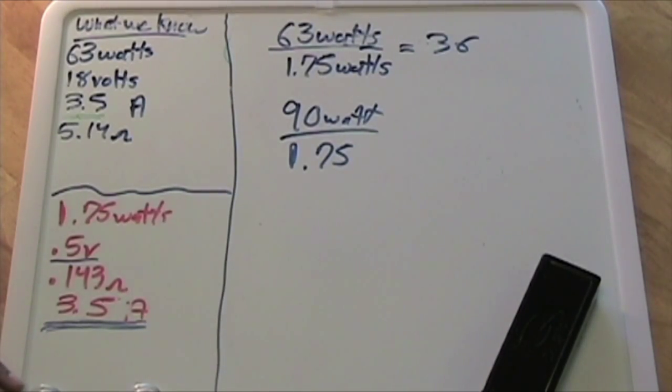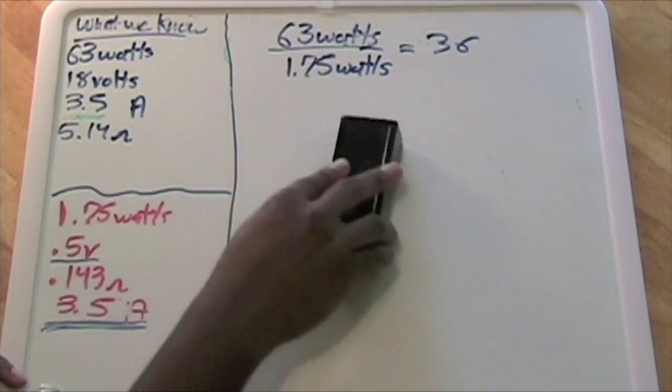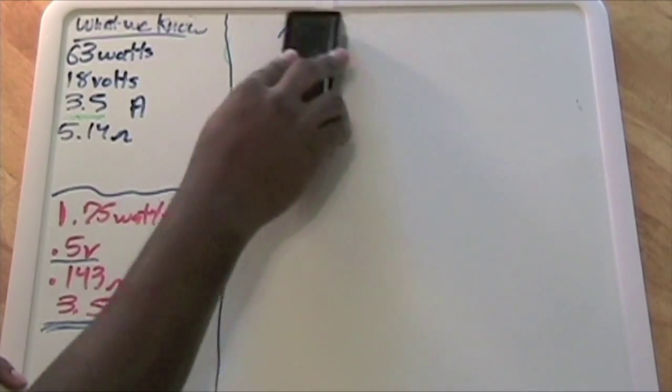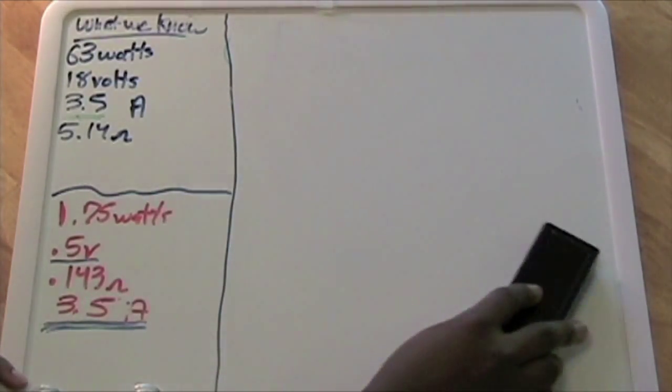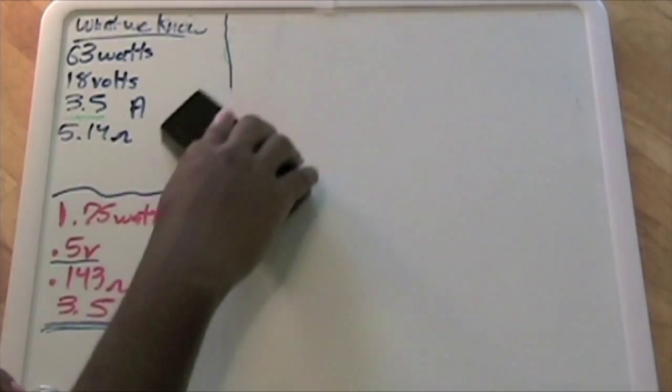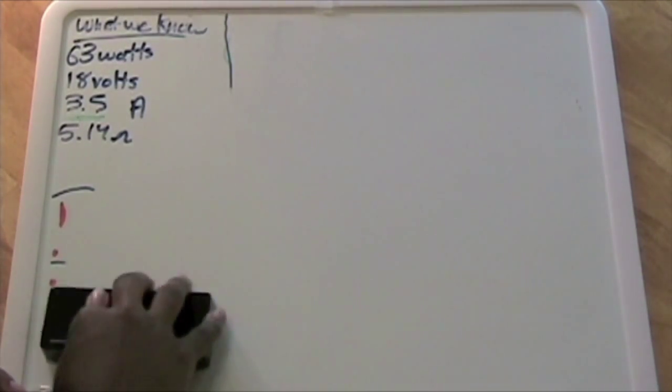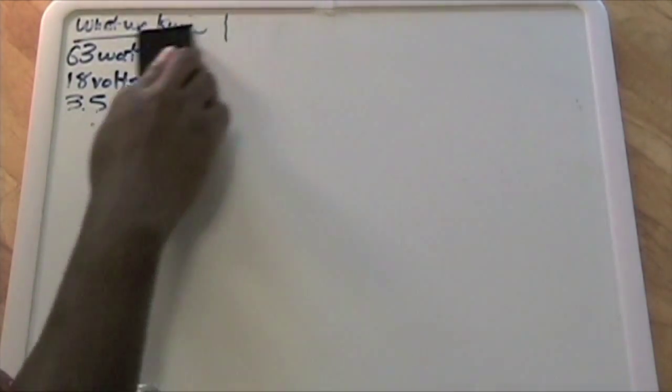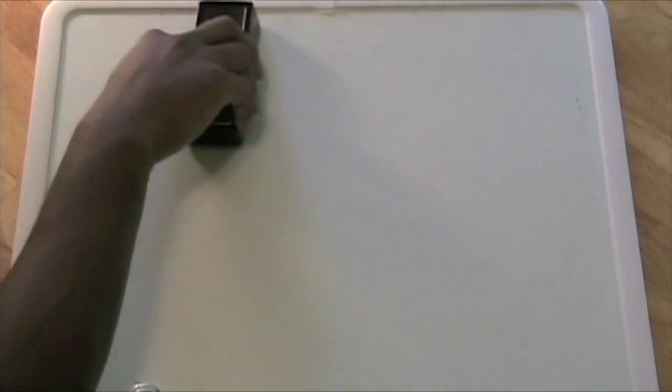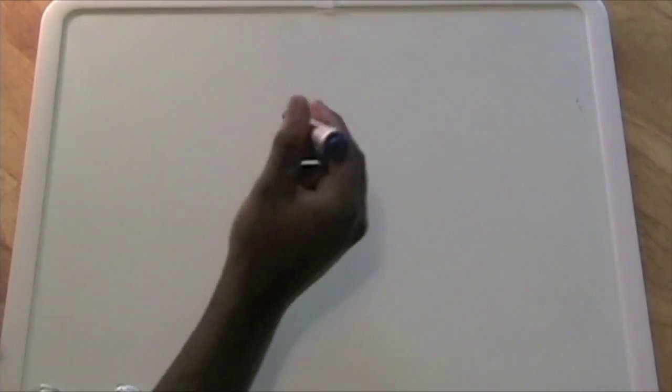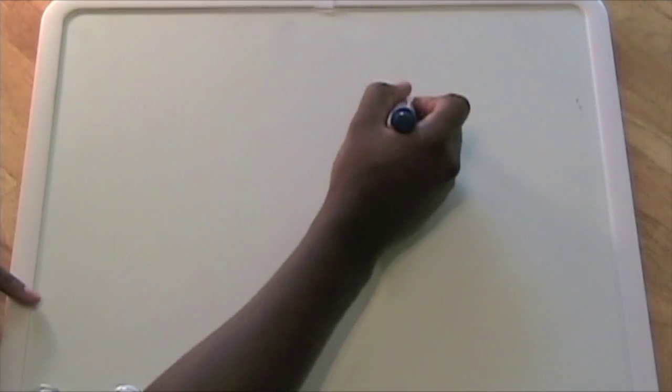Depending on how many watts each solar cell produces depends on how many solar cells you're going to need of that type of solar cell. Now, just to give you an idea, we're done with this example here. Let me just go into why I need the analog ammeter.